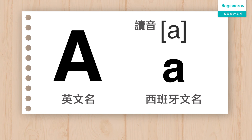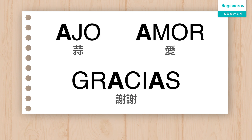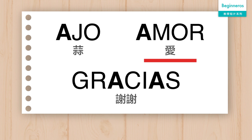A 在西班牙語入面叫做 A，而它是西班牙語入面的其中一個響音，所以它在任何情況之下都會讀 A。例如 Ajos, Amor。